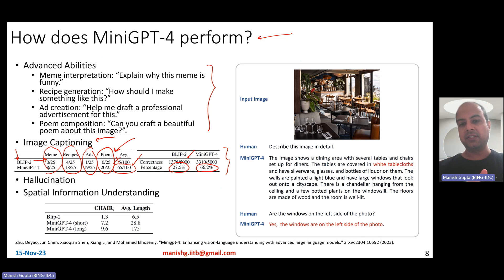But mini GPT-4 is not always great, so it can lead to hallucinations, and it can also lead to spatial information understanding problems. So for example, if you look at this image, it basically says that the tables are covered in white tablecloth. Now there is no white tablecloth around here. Similarly, are the windows on the left side of the photo? Yes, the windows are, but the windows are not on the left side of the photo at all. So therefore, it lacks good spatial understanding, and it can hallucinate as well.